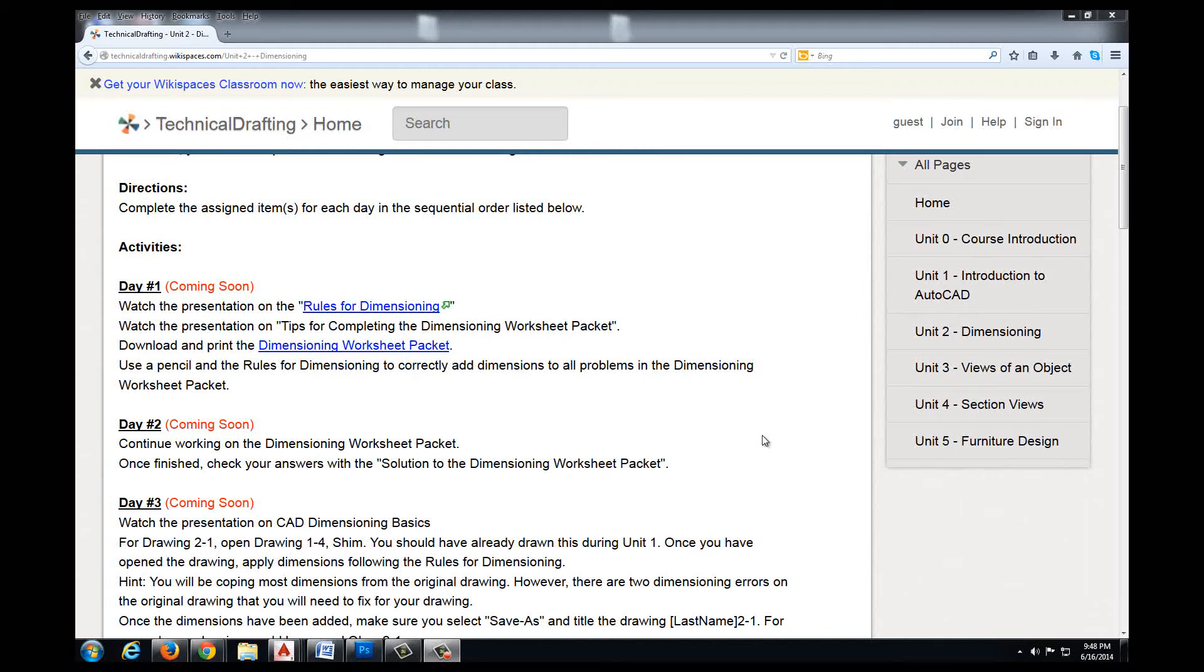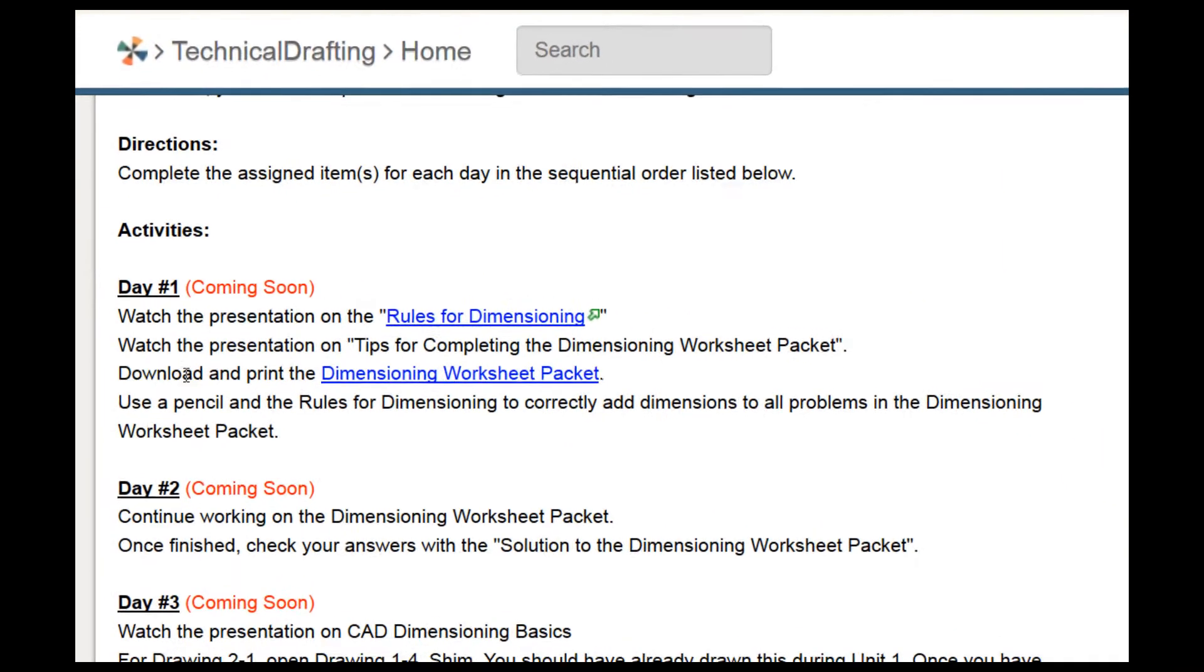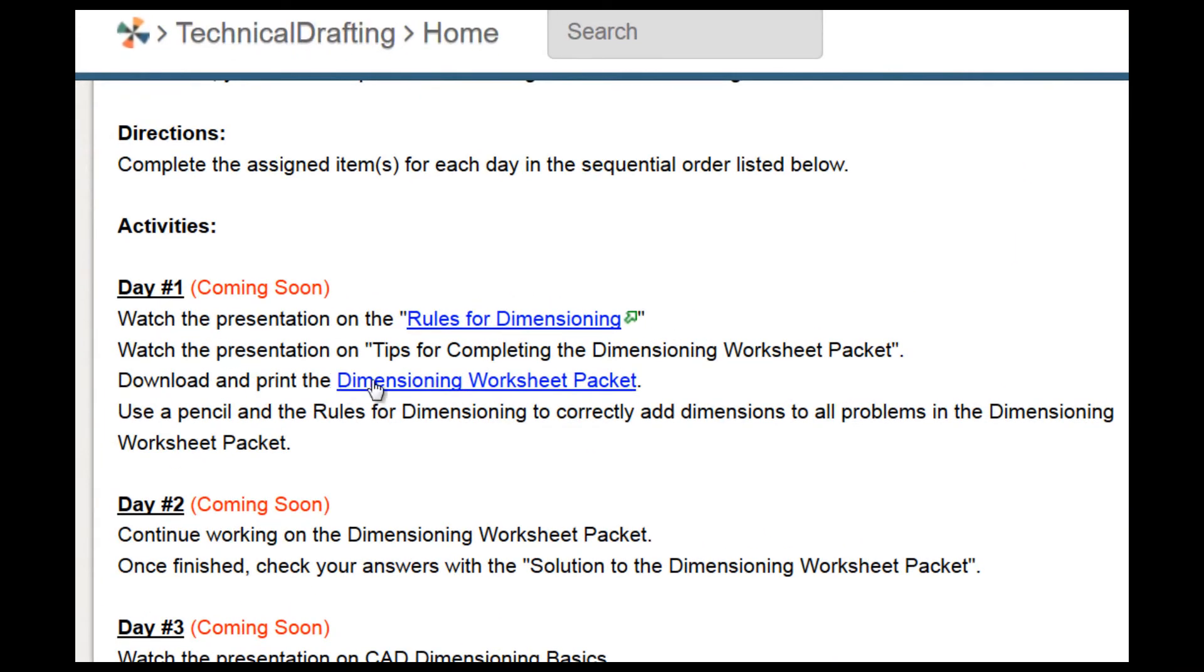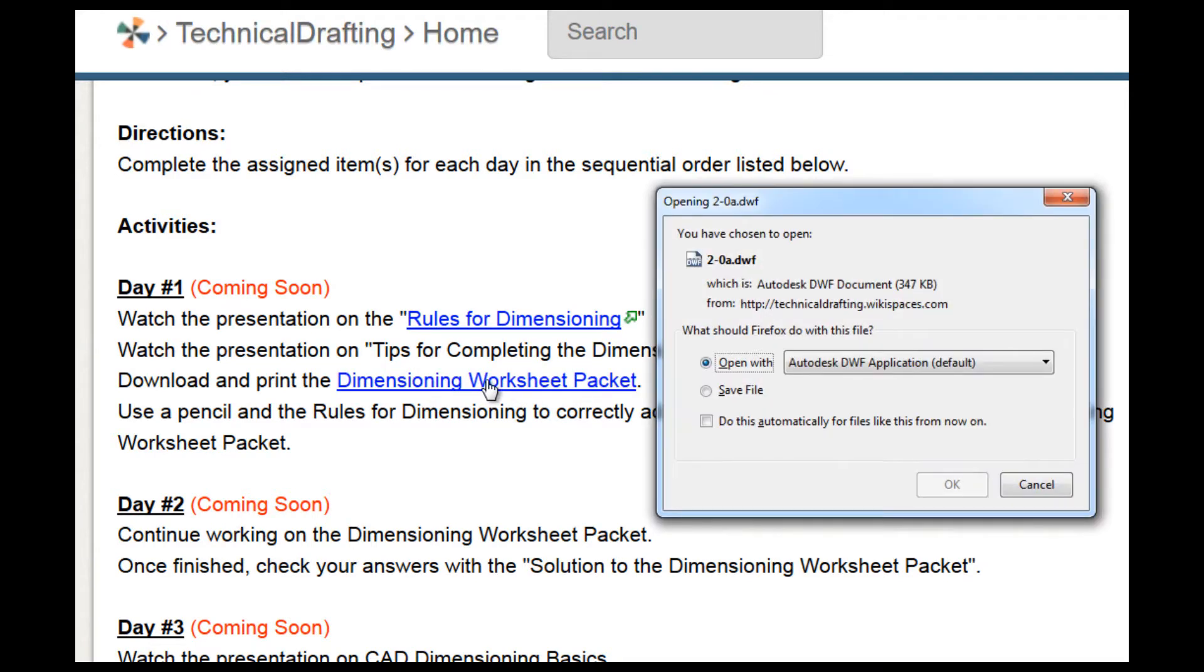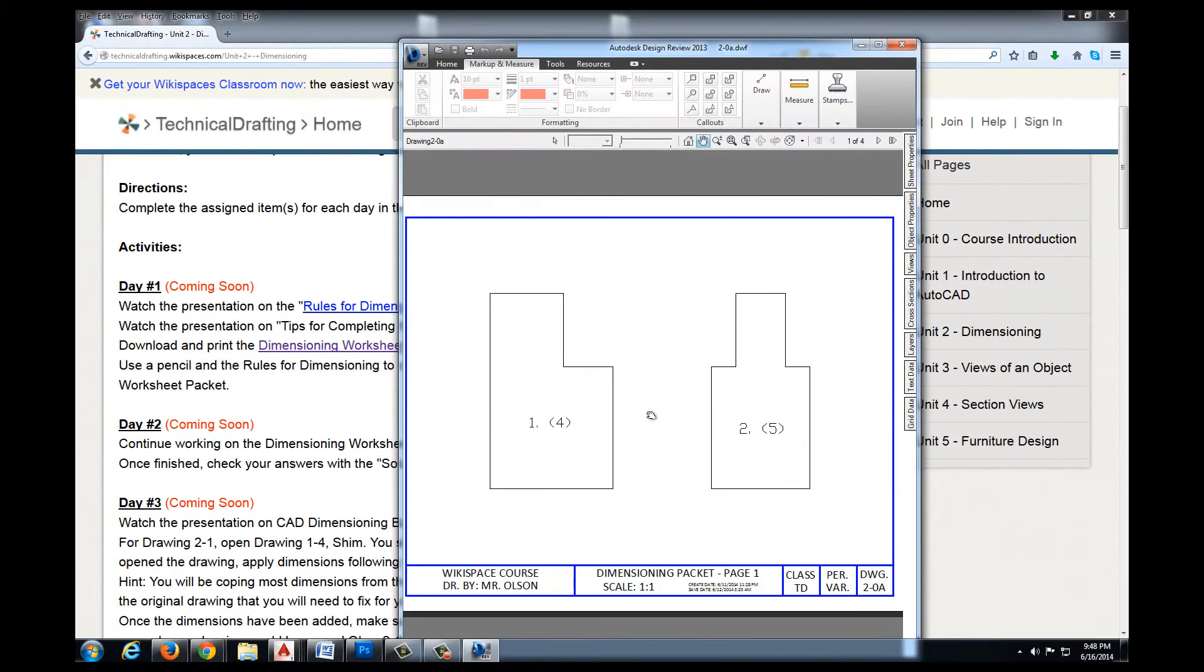The first thing we're going to do for working on this dimensioning worksheet packet is we're going to locate the actual file. Right here it says download and print the dimensioning worksheet packet. I'm going to left click one time and go ahead and open that, and that is going to open it in Autodesk Design Review.